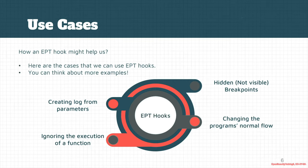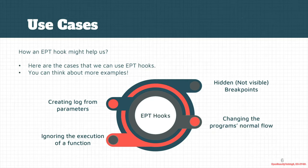Let's look at some use cases for EPT hooks. First, the hook is not visible — if you are debugging malware that extensively monitors its memory to check whether something has changed or if there is a breakpoint, HyperDBG's EPT hooks won't notify the malware that its memory has changed. Another use case is creating logs from the parameters of a function, or checking whether a specific part of a function is ever called. EPT hooks are faster than WinDbg in these cases.